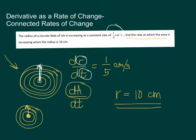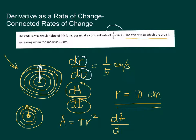We need to find a connection between the area and the radius. Since we are talking about the area of a circle, the function to be used is the area formula: A = π r². Critical to this is that we have derivatives with respect to time. So to get the derivative of the area with respect to time, we have to deal with r with respect to time as well. This is where the concept of implicit differentiation plays a big role.